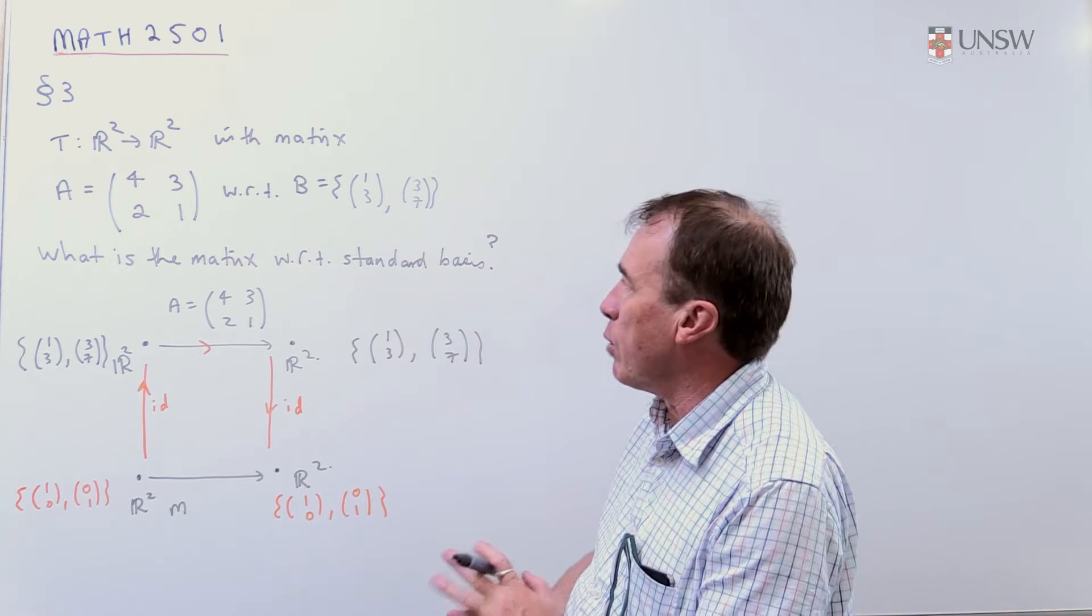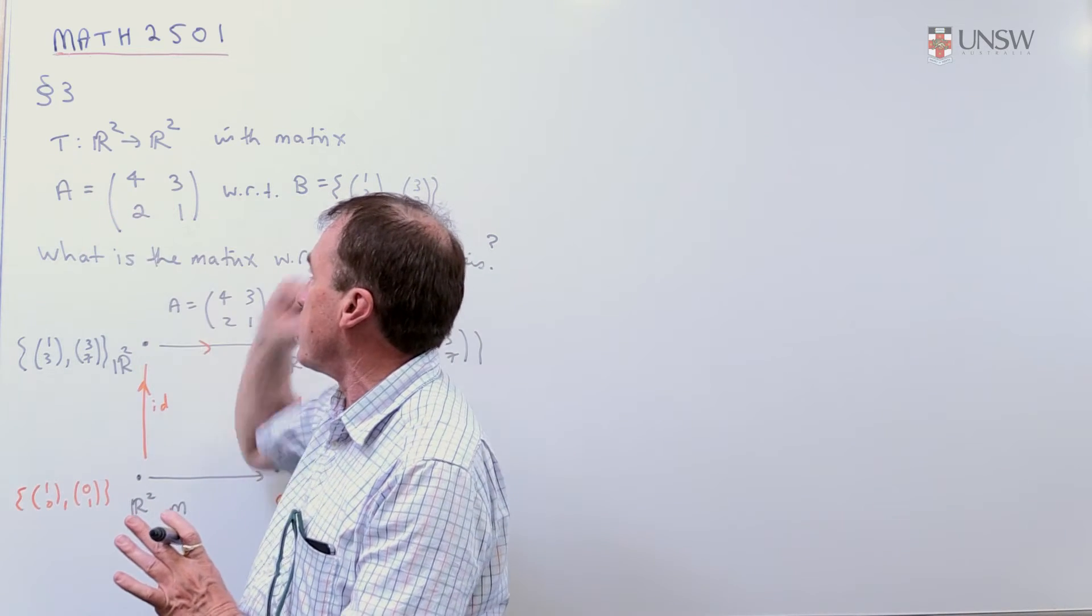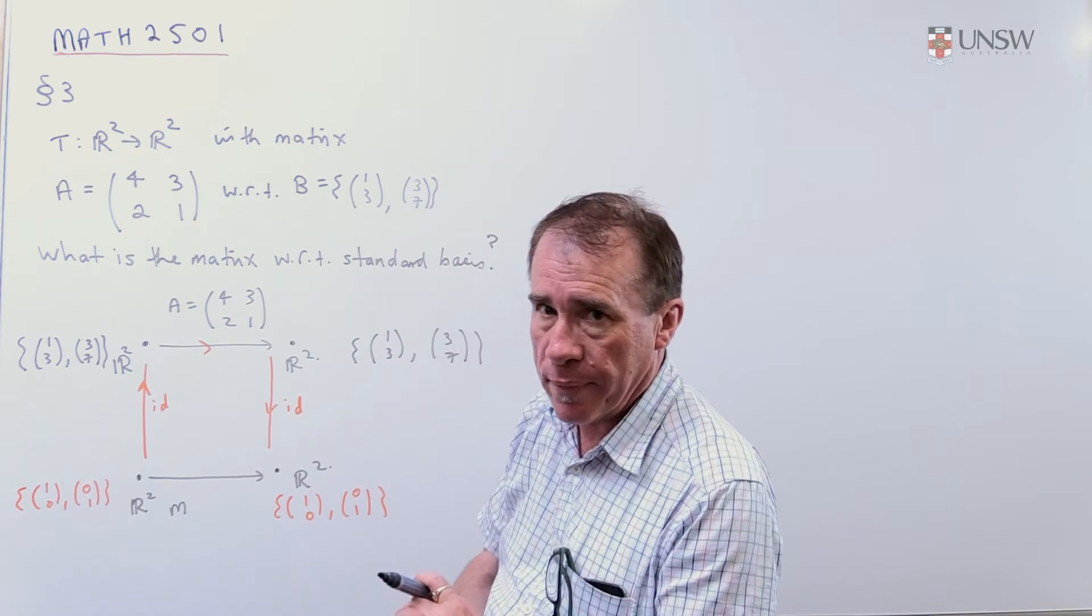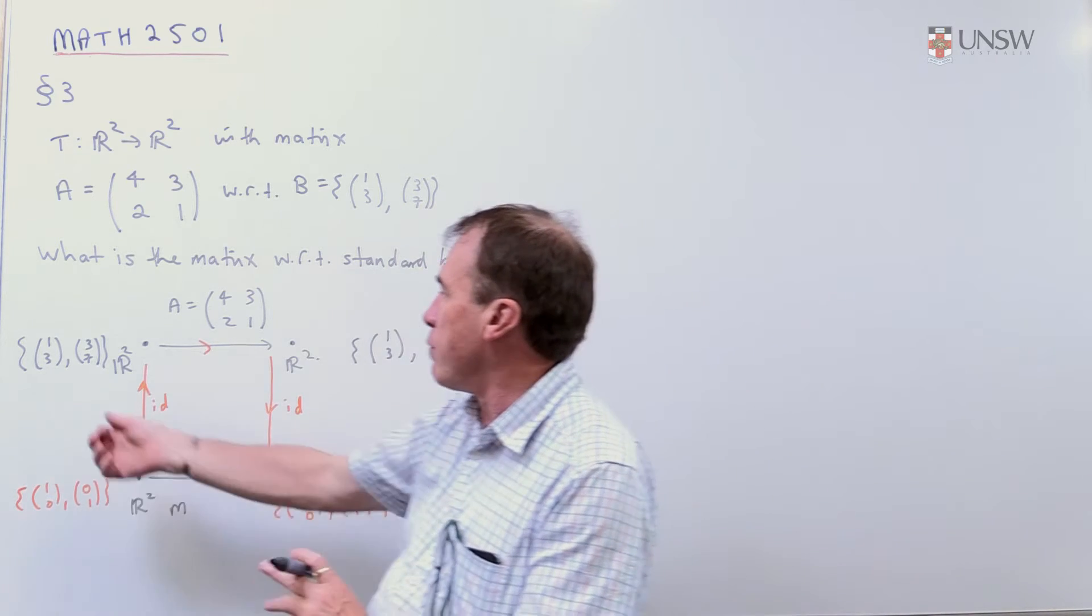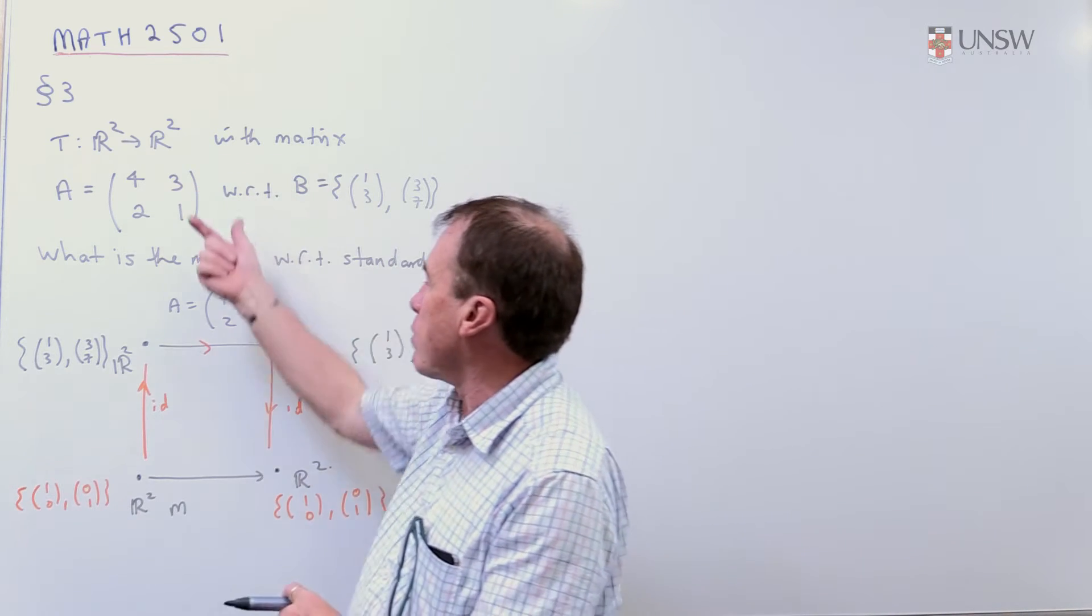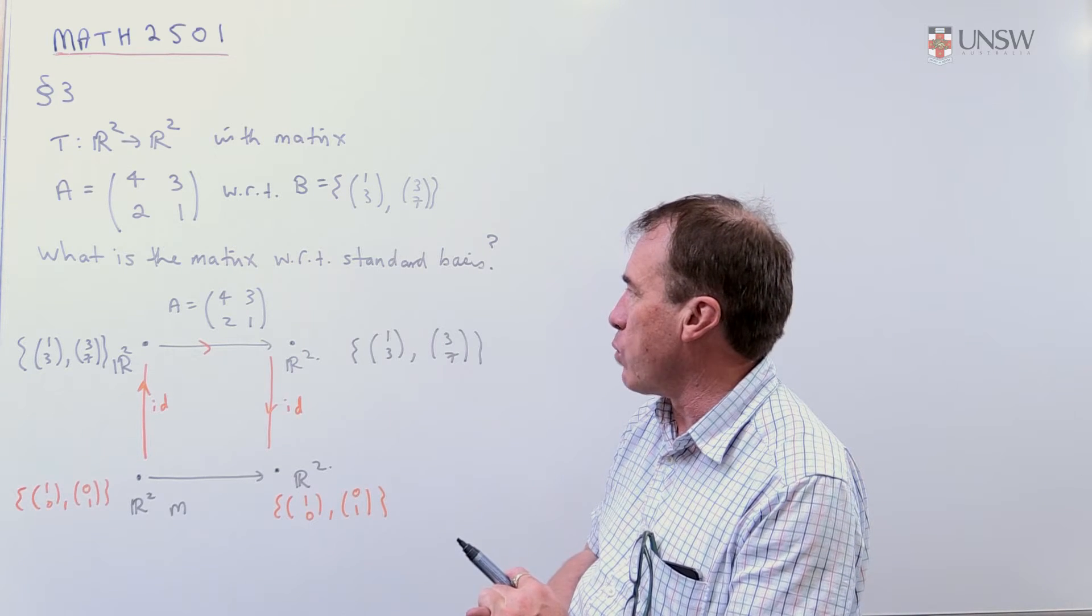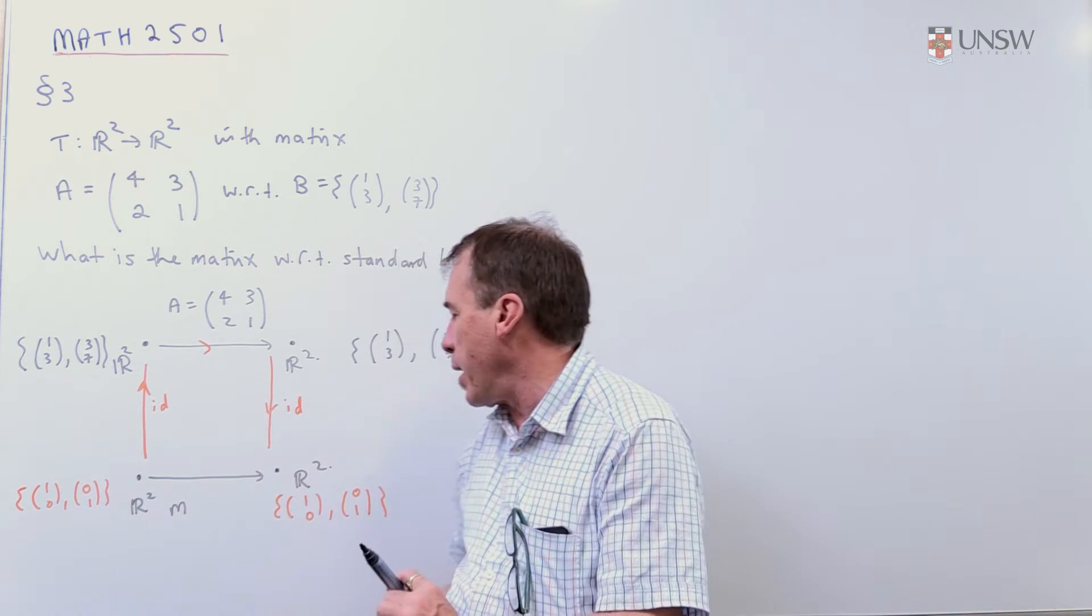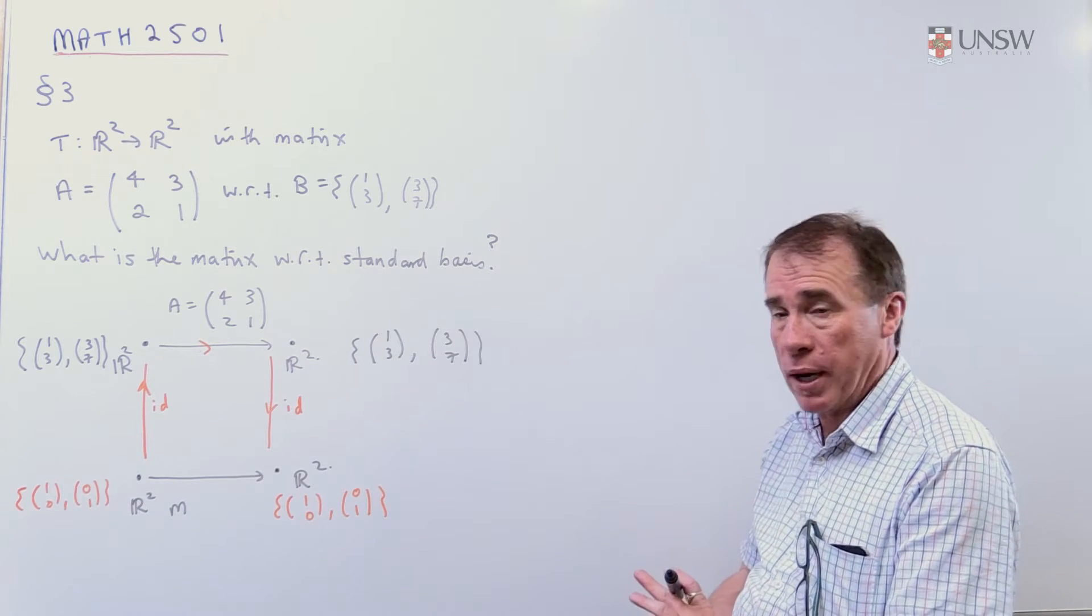So in this problem we have a linear map, we're not told explicitly what it is, except we're given the matrix with respect to this basis. We've got some linear map from R² to R², and if we use this funny basis B as our basis for the domain and for the co-domain, then this is the matrix representation of this linear map. What we'd like to know is, what's the matrix representation for it with respect back to the standard basis?